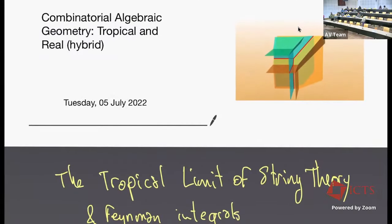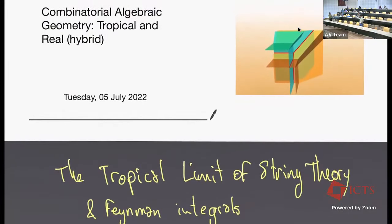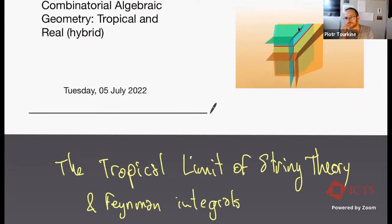We have a number of talks at the interface between physics and mathematics in this conference, and this is one of them. It's my pleasure to introduce Pjotr Turkin, who will tell us about the tropical limit of string theory and Feynman integrals.